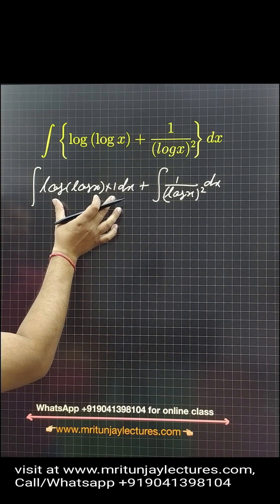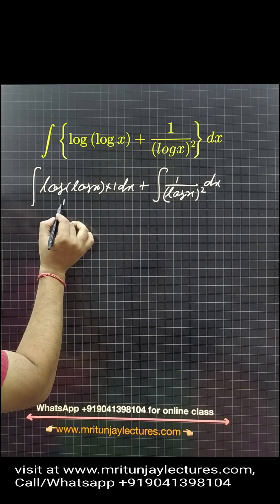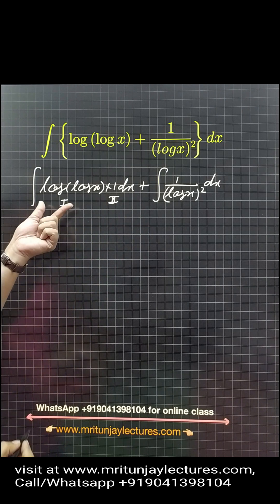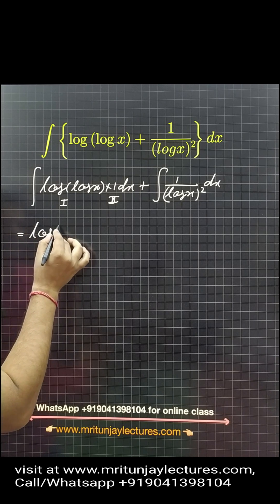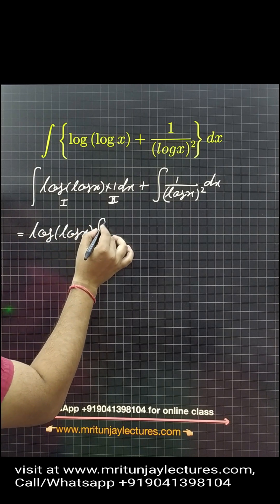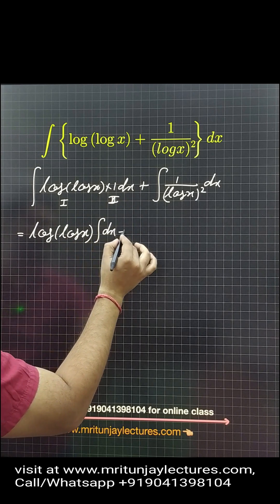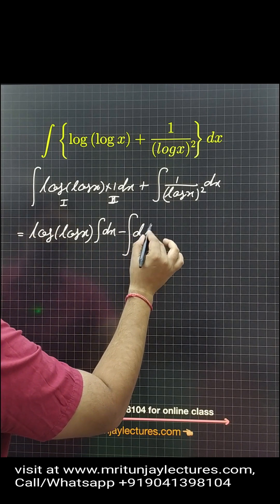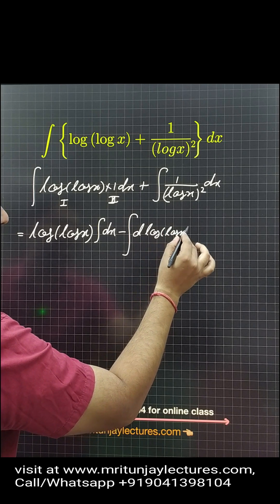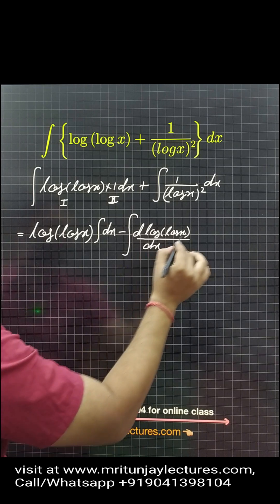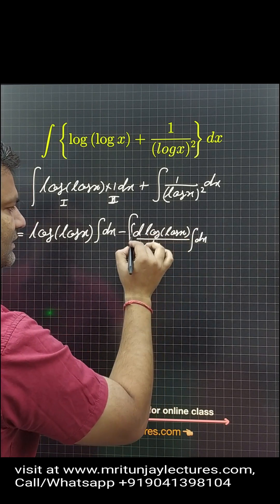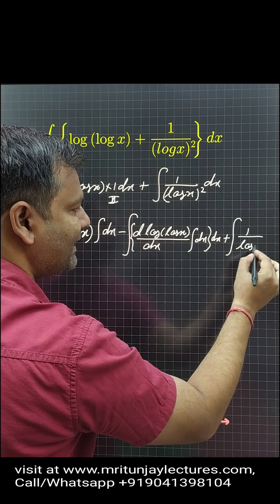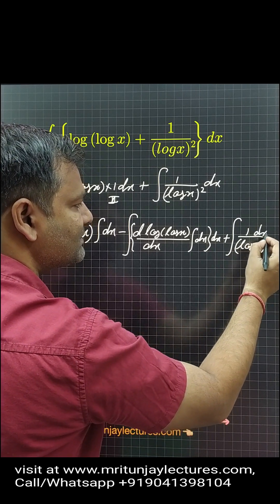Now, using integration by parts — that is first into second. The formula of integration by parts: first function log(log x) into integration of the second, which is simply dx, minus integration of the differentiation of that function into integration of dx, plus 1/(log x)² dx.